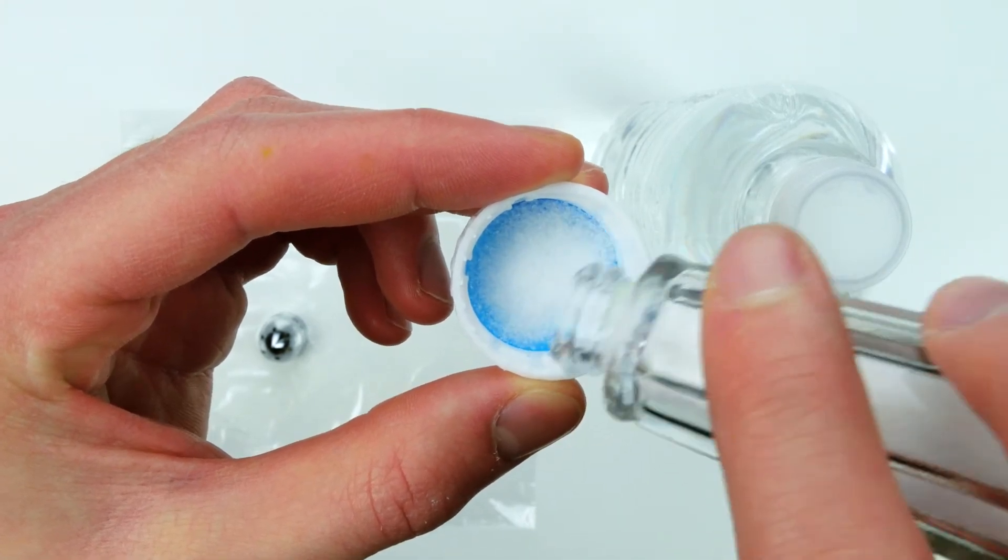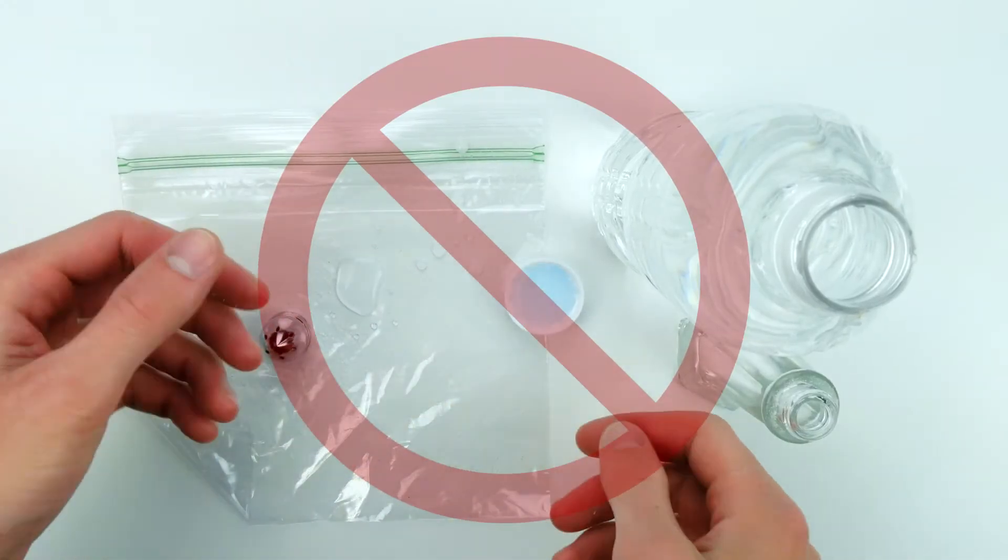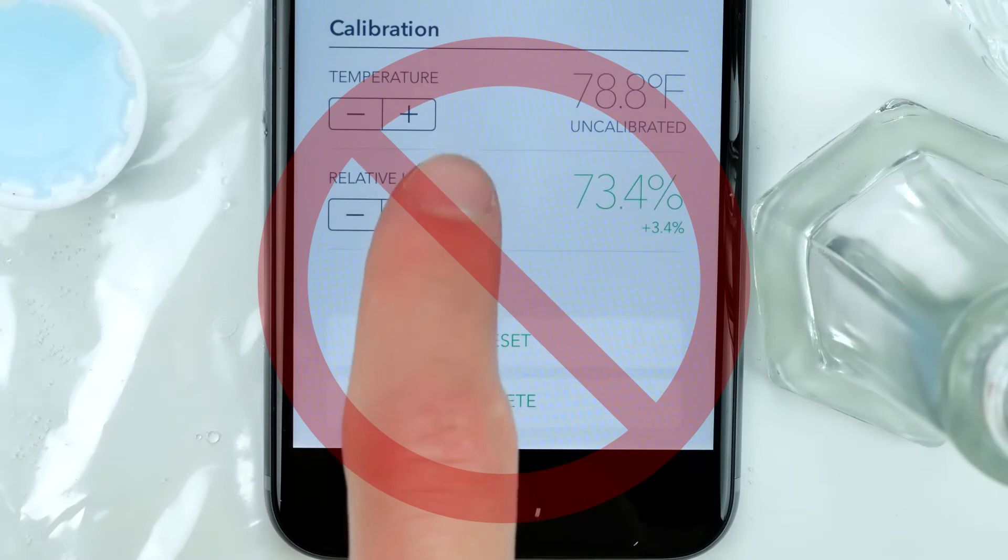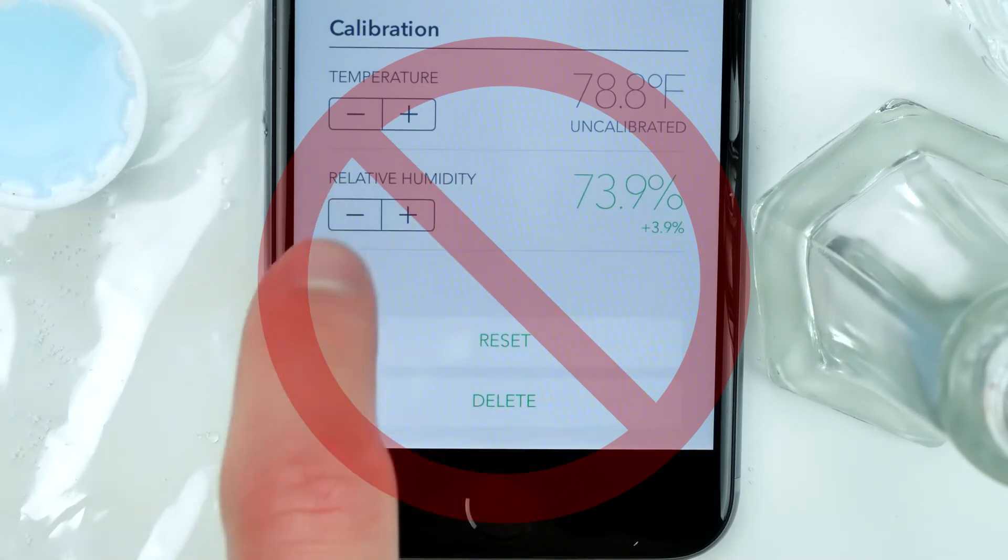For humidity, the salt test is quite popular and can work well, but we find that it's tricky to execute properly. Calibrating to an unreliable reference can be worse than not calibrating at all.